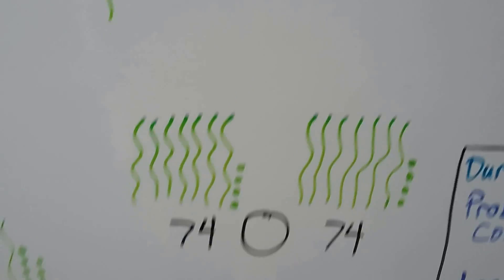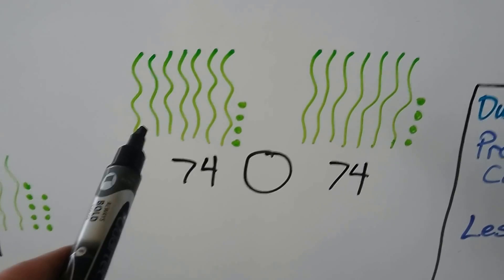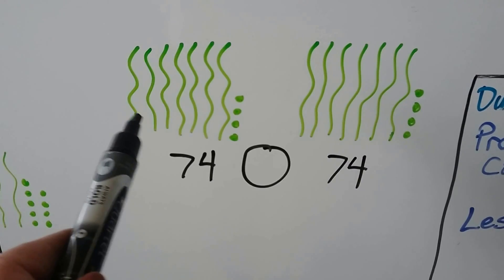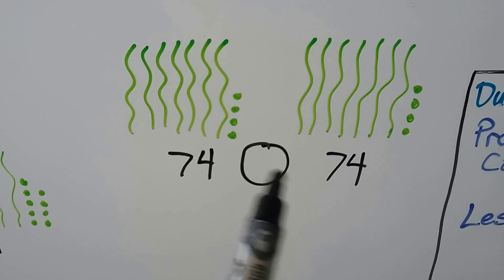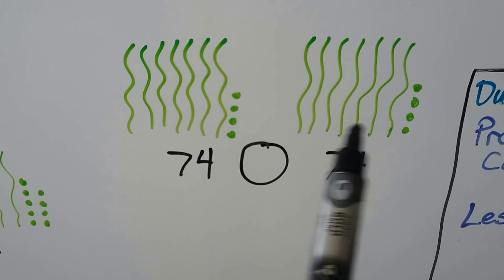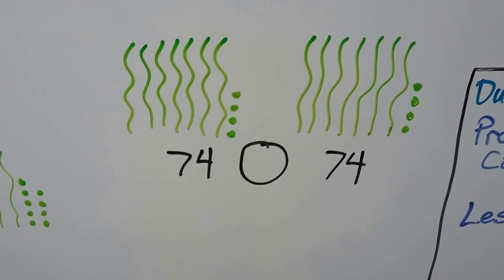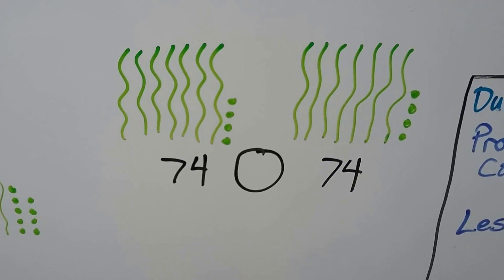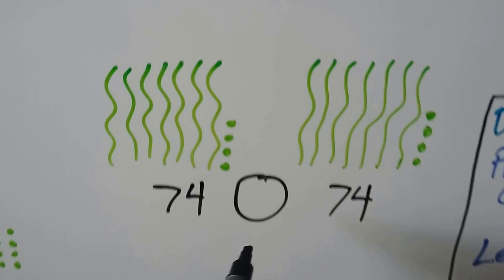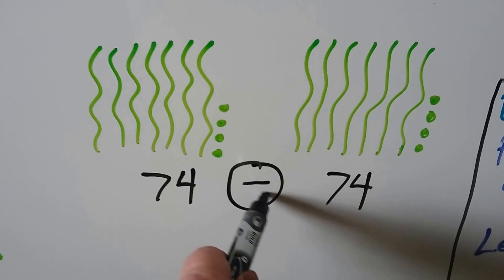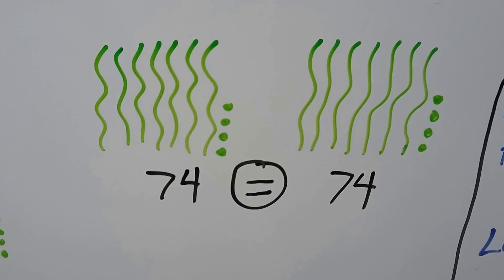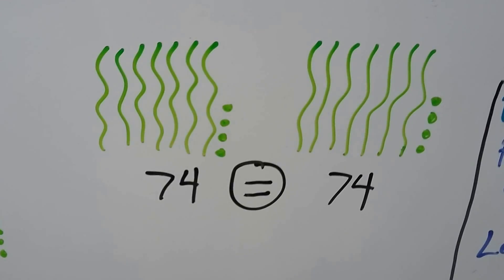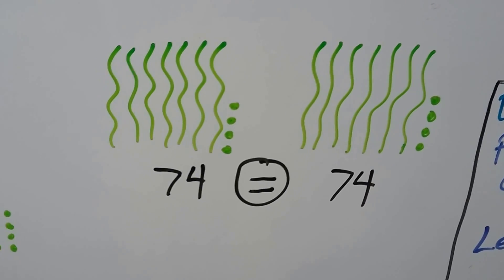Here we have 74 — seven tens and four ones — and here we have seven tens and four ones. We have the same number of tens and the same number of ones, so they are equal to each other. 74 is equal to 74.